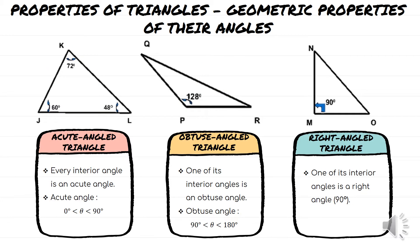Now we are going to look at the second classification based on the size of their angles. We have 3 types of triangle: acute angle triangle, obtuse angle triangle, and right angle triangle. For the acute angle triangle, every interior angle is an acute angle. An acute angle is an angle that lies between 0 and 90 degrees — not including 90.